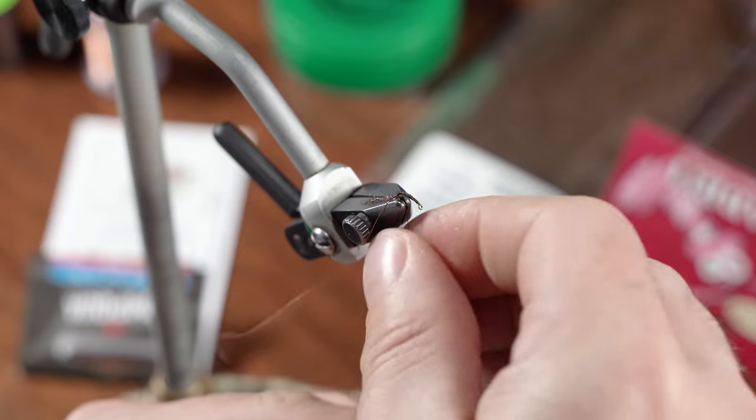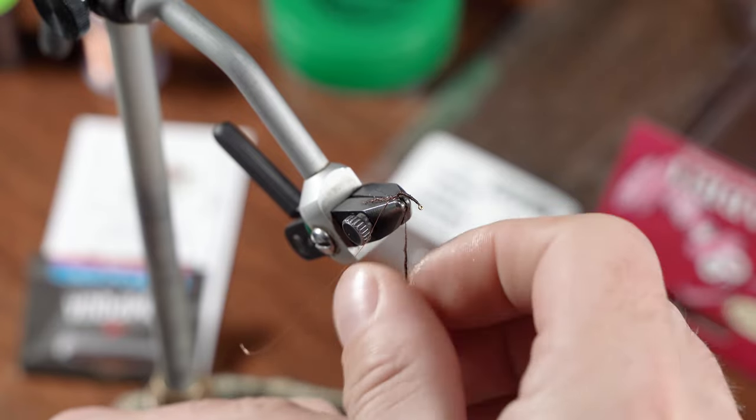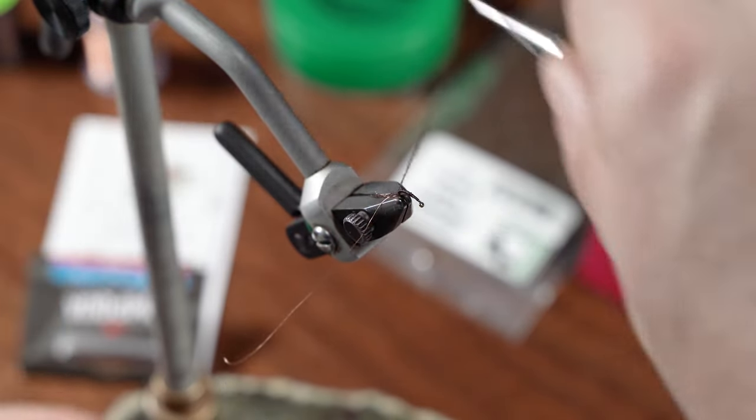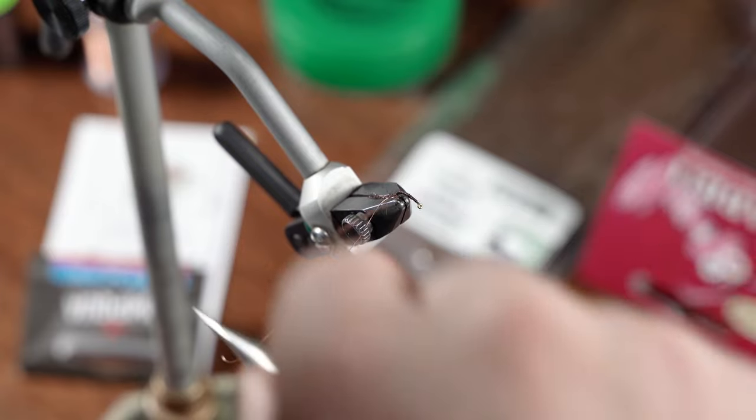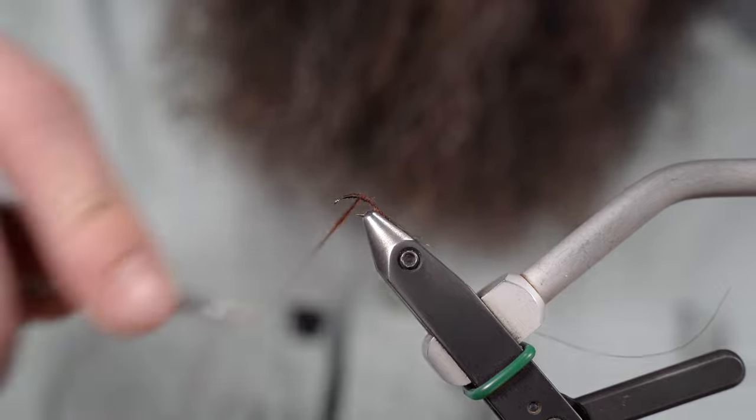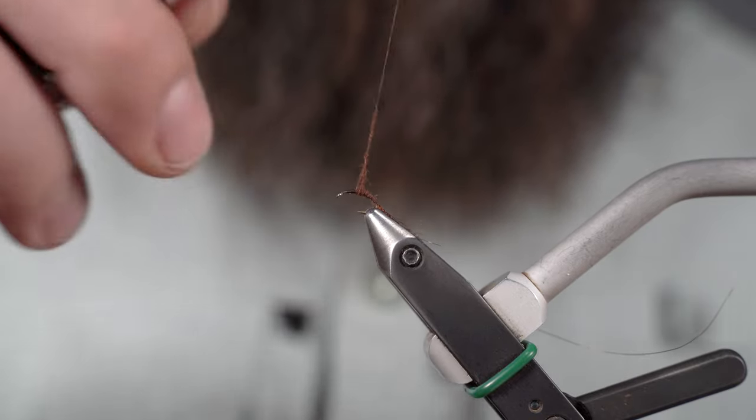There's some guard hairs in here. Kind of picked out some of the thick, real long ones. You can leave them in there and just trim them out afterwards or even leave them in. It gives more of a buggy look to this fly.